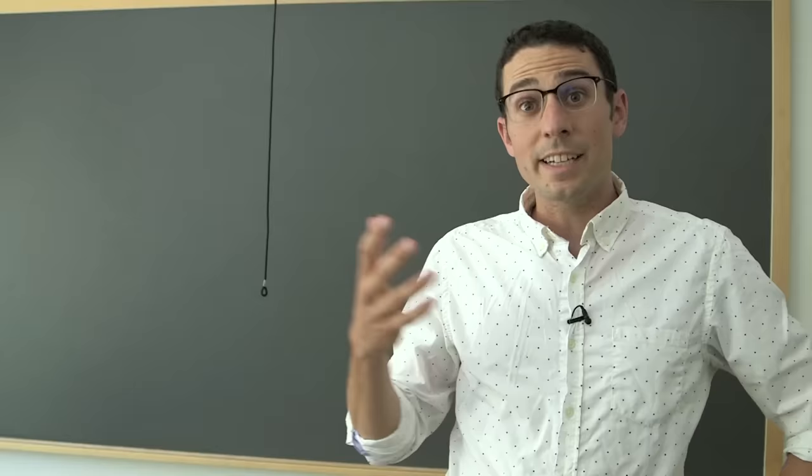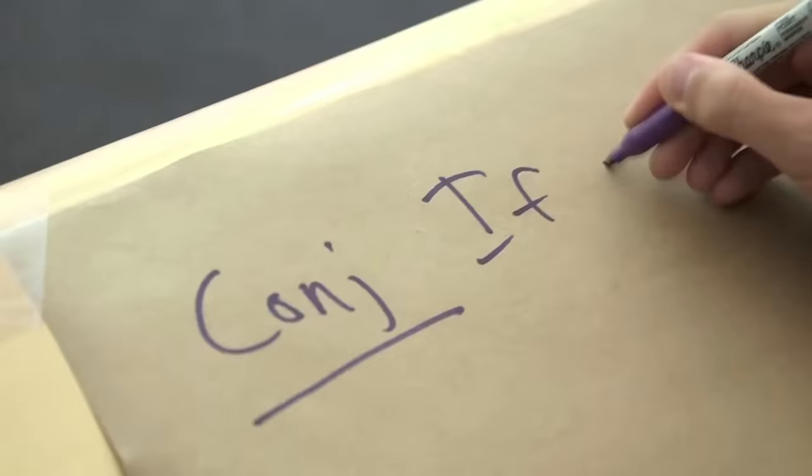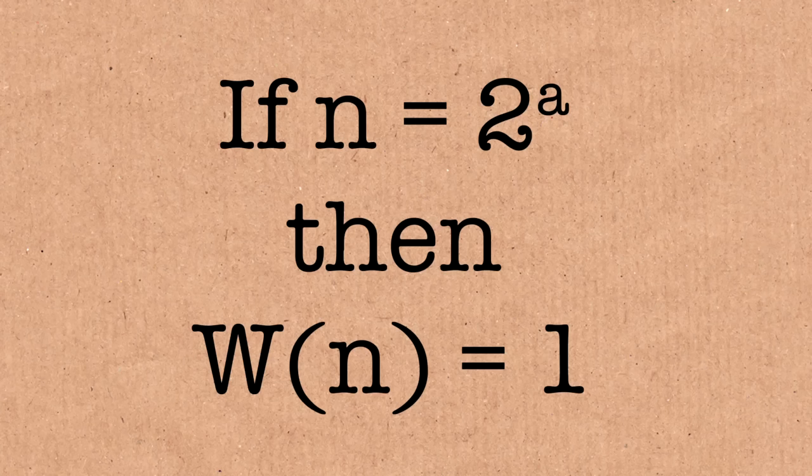And so that's what I want to do. So here's the conjecture, is that if n is a pure power of two, then the winning seat is one.